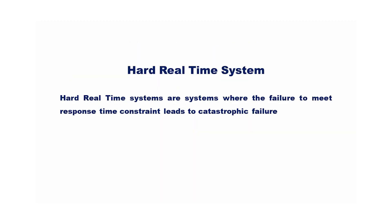Hard real-time systems are systems where the failure to meet response time constraints leads to catastrophic failure. An example is a nuclear power plant control system.